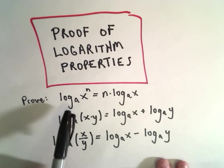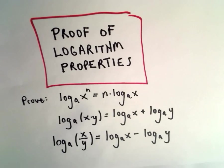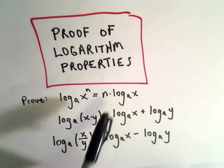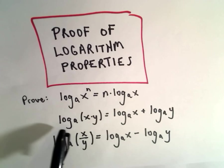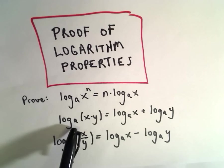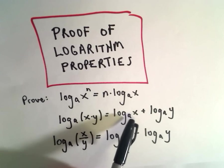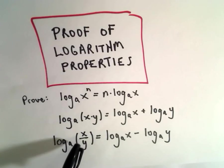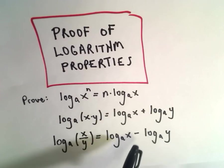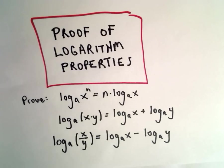The first one is the power rule: log base a of x raised to the power of n can be rewritten as n times log base a of x. If we have log base a of x times y, we can write that as log base a of x plus log base a of y. And if we have division instead of multiplication, we end up getting subtraction instead of addition.